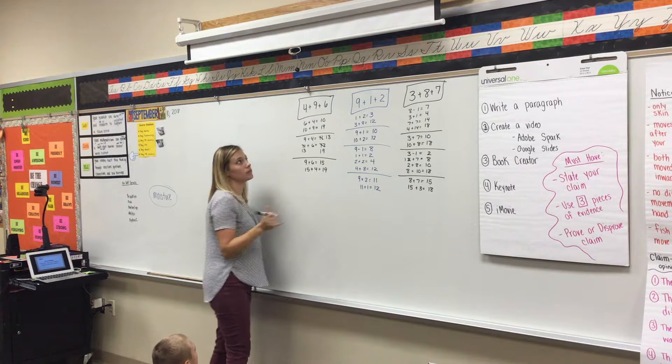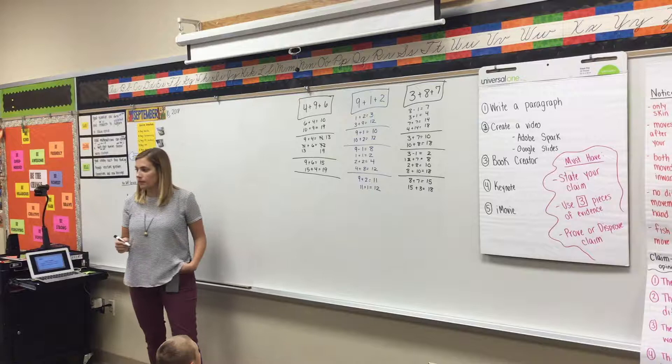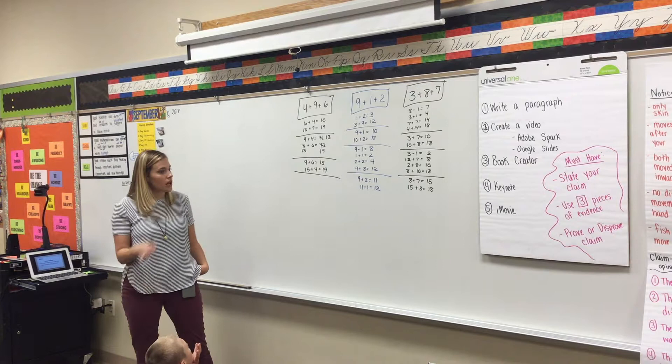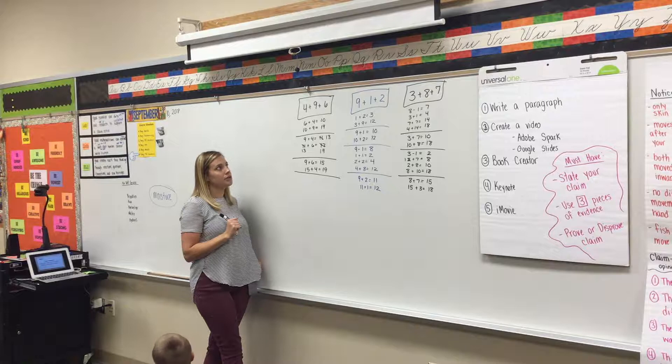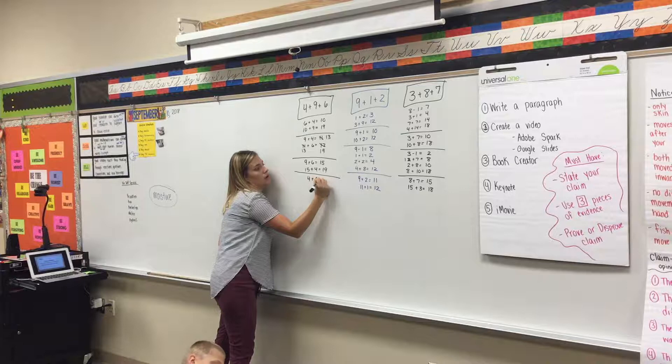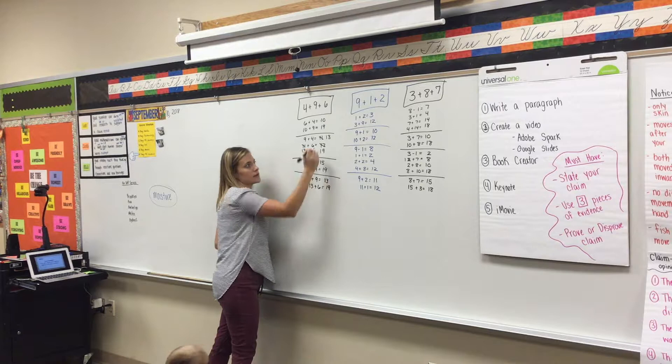Anyone else got a different way? Caleb? Never mind. Okay. That's okay. Somebody might have already taken your way. So then just think about it and see if you can find another way. Ava? So 4 plus 9 is 14 and 13 plus 16 plus 16. Okay, so you did the same way.